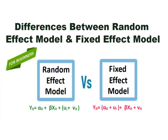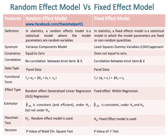Differences between Random Effect Model and Fixed Effect Model. In statistics, a random effects model is a statistical model where the model parameters are random variables, whereas a fixed effects model is a statistical model in which the model parameters are fixed or non-random quantities.